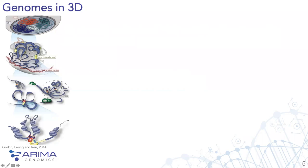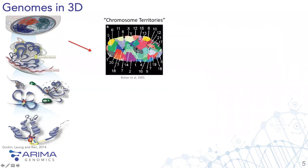Looking more closely at TADs and loop structures reveals an even finer-scale chromatin organizational feature. These individual loops tend to be mediated by proteins such as Cohesin and Mediator. Orthogonal evidence for these structures comes from microscopy studies where researchers painted chromosomes different colors, revealing chromosome territories. Each chromosome is its own color, organized into self-interacting structures, with inter-chromosomal interactions really only occurring at the periphery during interphase.